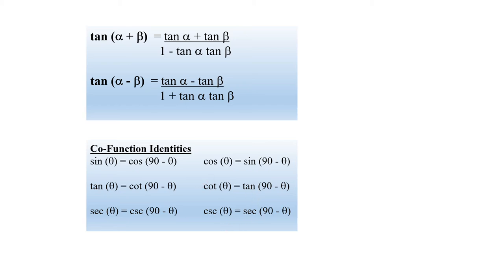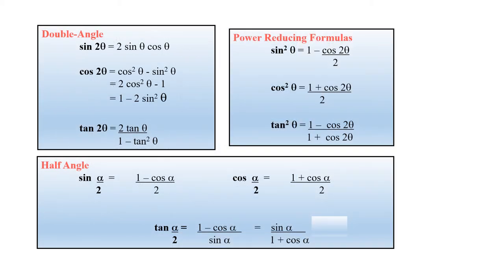Double angle equations: sin 2theta is equal to 2 sin theta cos theta. Cos 2theta has multiple forms: cos squared theta minus sin squared theta, 2 cos squared theta minus 1, and 1 minus 2 sin squared theta.